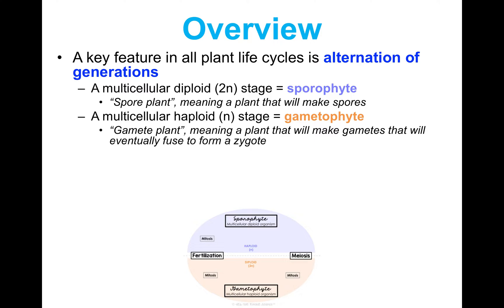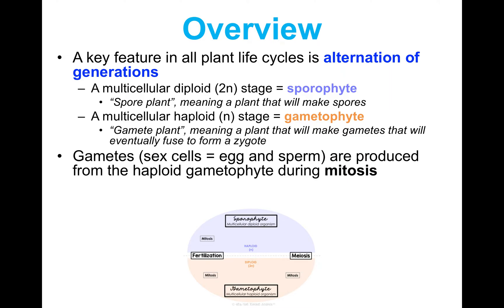The gametophyte will make gametes that will eventually fuse to form a zygote in fertilization. From our genetics units, diploid means two full sets of chromosomes and haploid means one set of chromosomes. The gametophyte makes gametes — your sex cells, your egg and sperm — and these are produced from the haploid gametophyte during mitosis, which makes identical copies of cells. It's an asexual process.